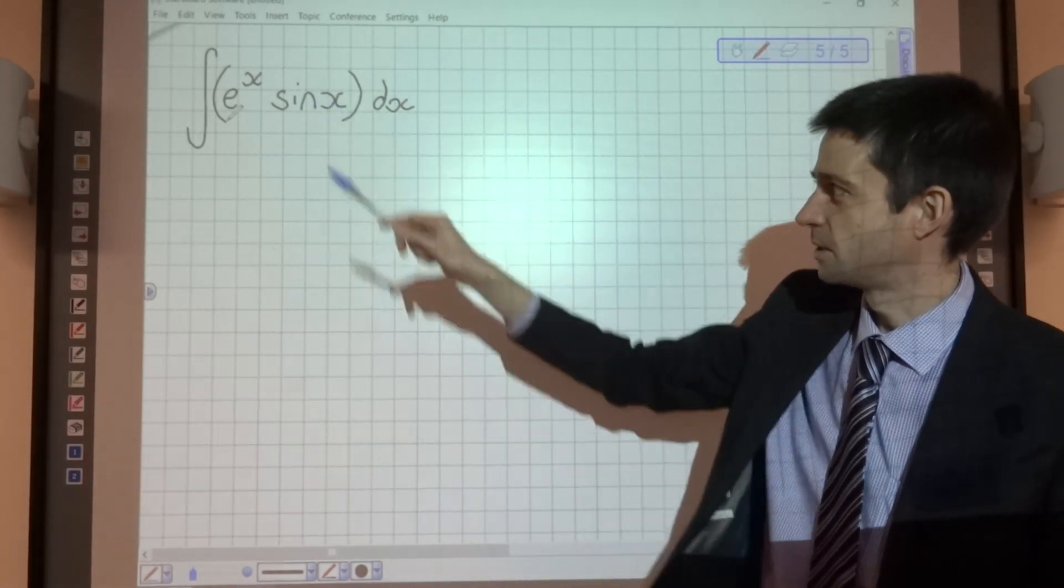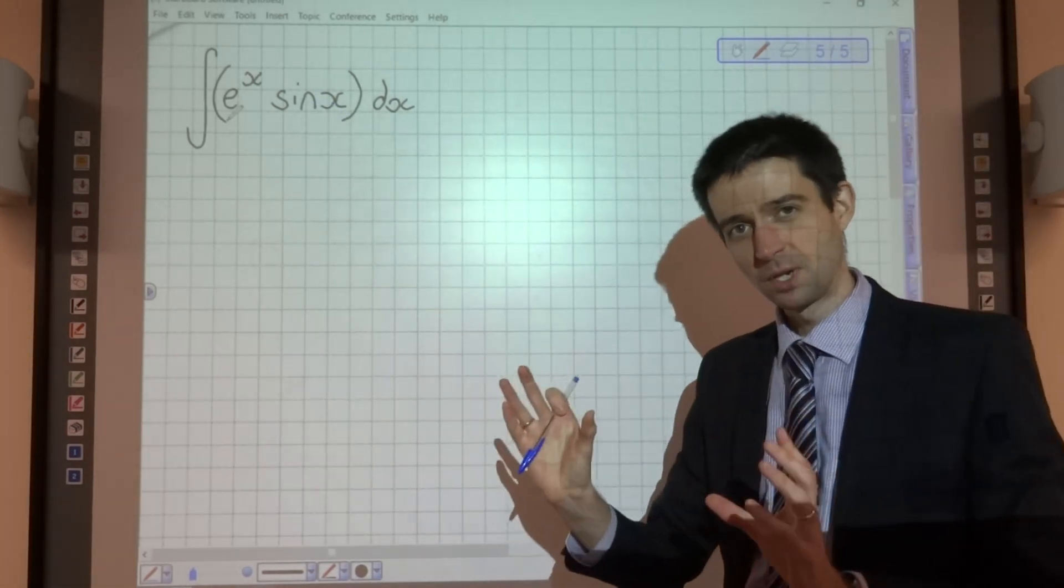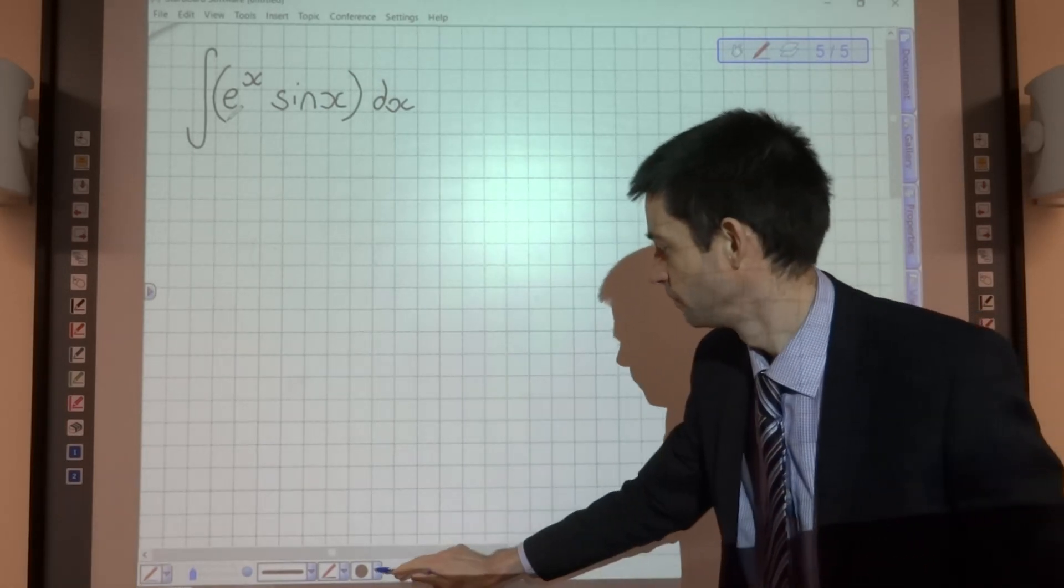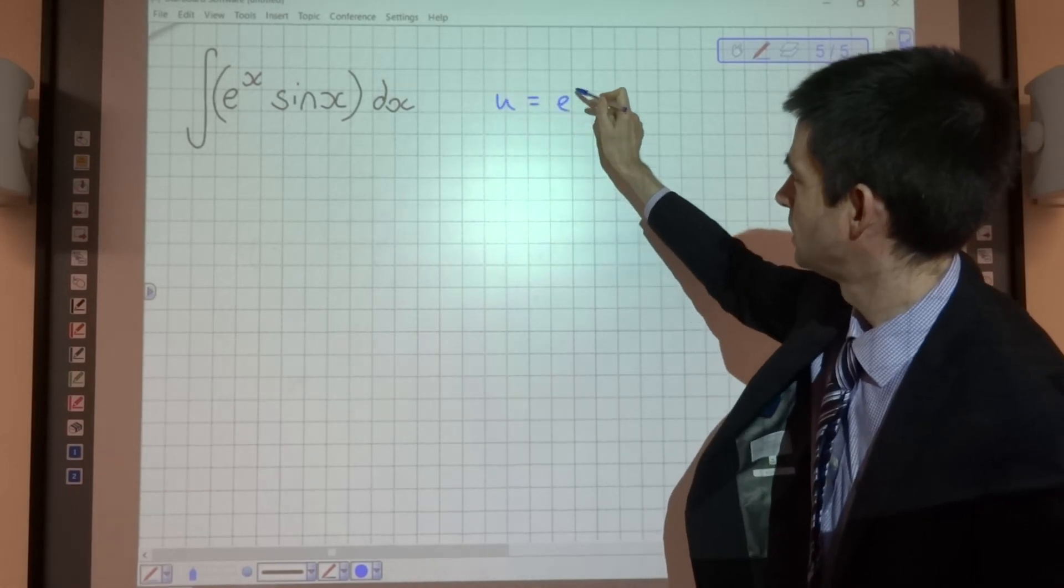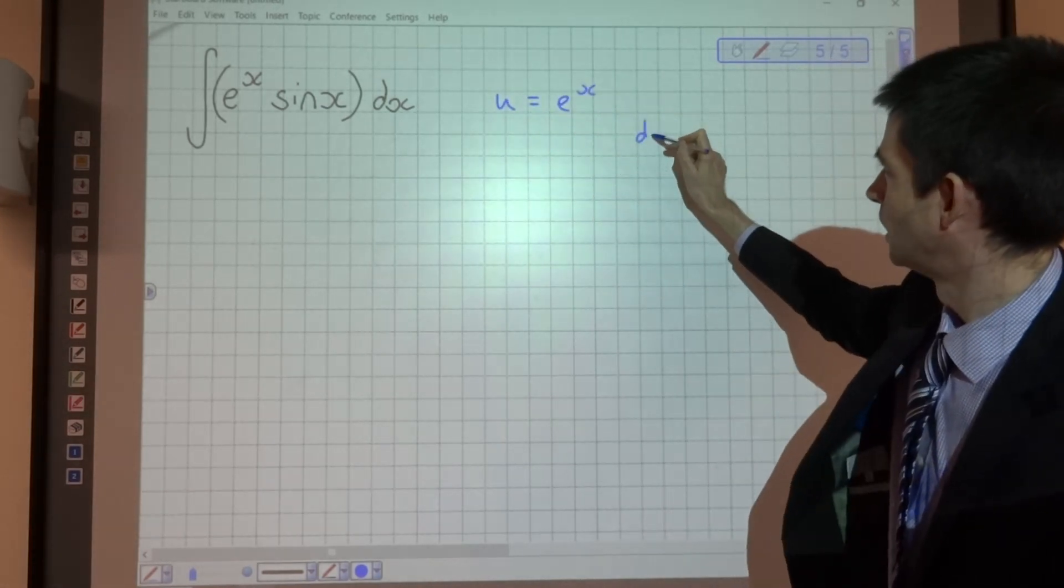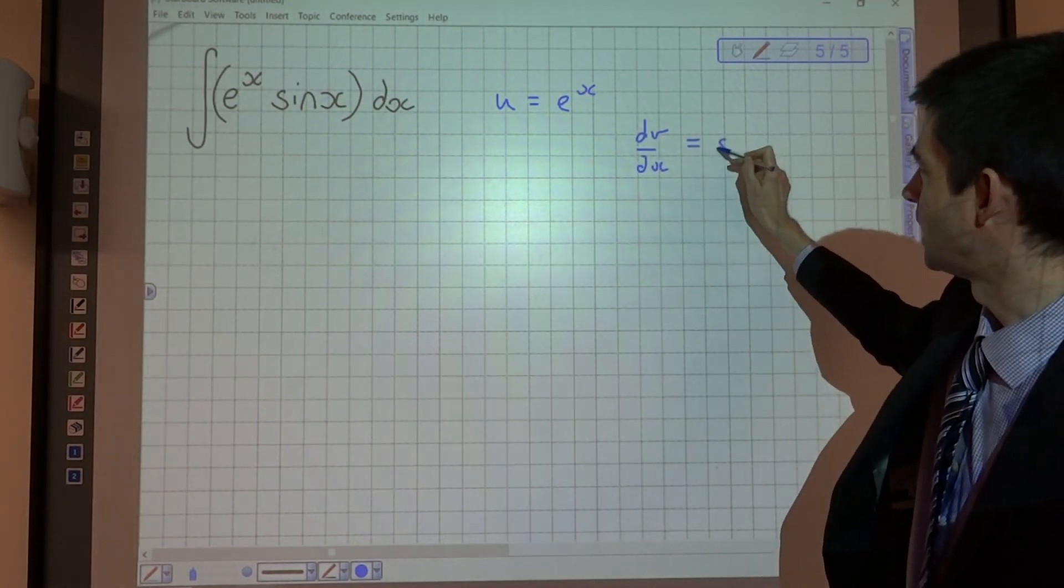e to the x sin x, two things multiplied together so integration by parts is going to be my strategy. I'm going to start off by writing that u is e to the x and that dv dx is sin x.